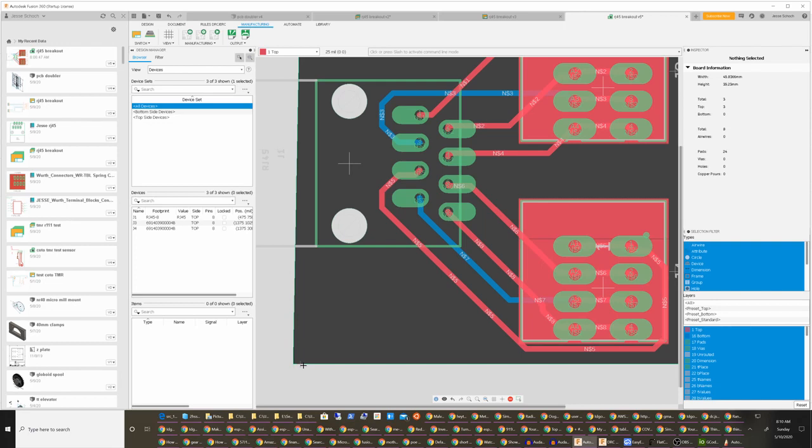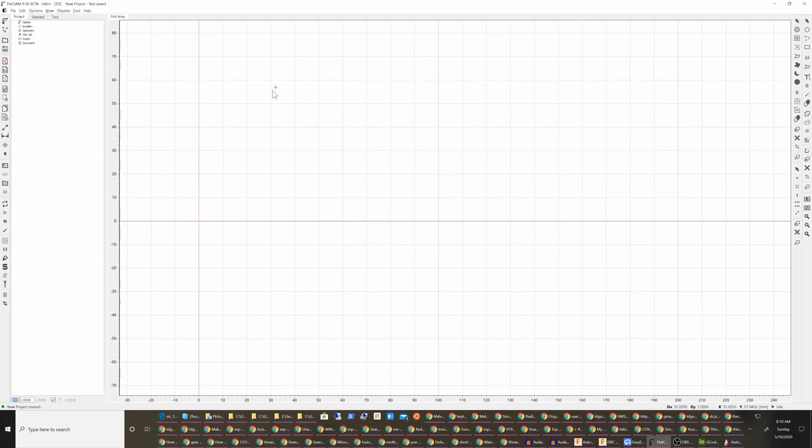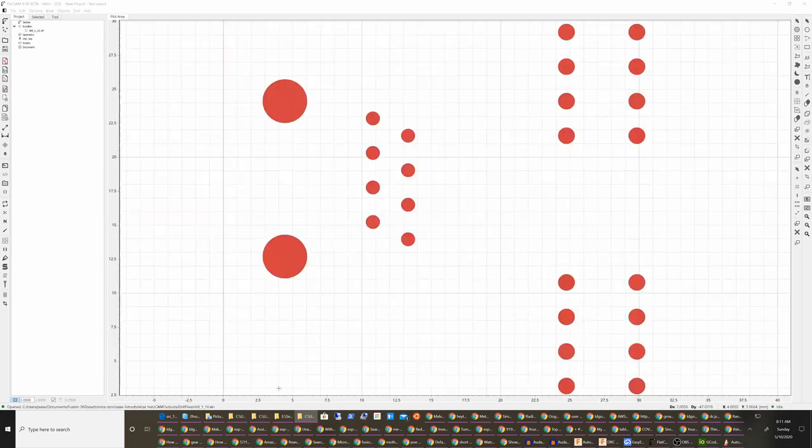So here in the FlatCAM beta, this is 8.9.8, I'm going to drag in some files. Start with the Excellon and then I'm going to drag in the copper top, copper bottom, and the profile.